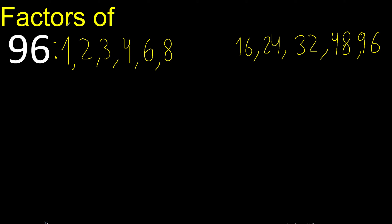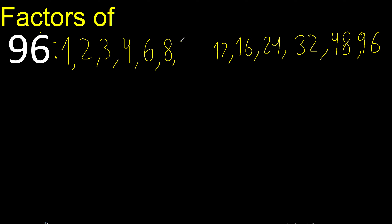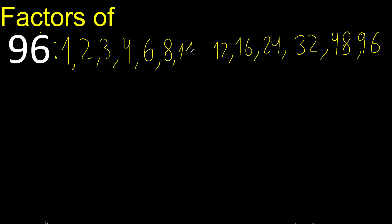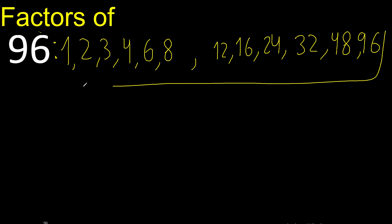96 divided by 8 is 12. Next is 9, but cannot be divided by 9. Cannot be divided by 10, cannot be divided by 11. Next is 12 — 12 is already here, therefore finish!